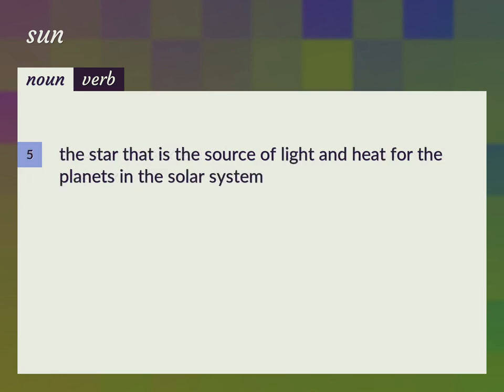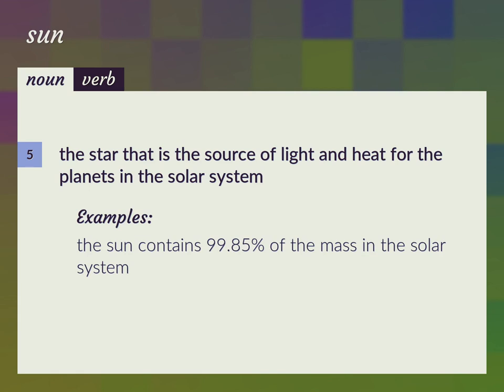The star that is the source of light and heat for the planets in the solar system. The sun contains 99.85% of the mass in the solar system.